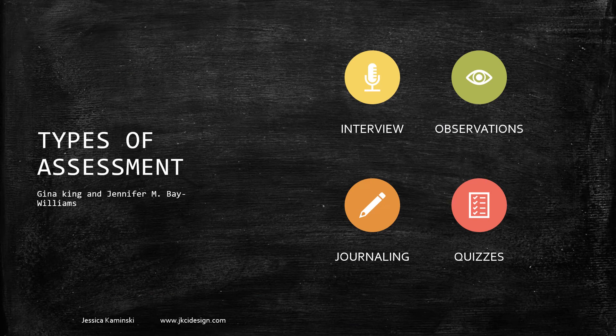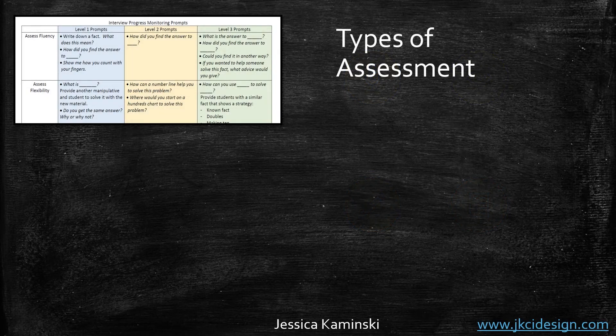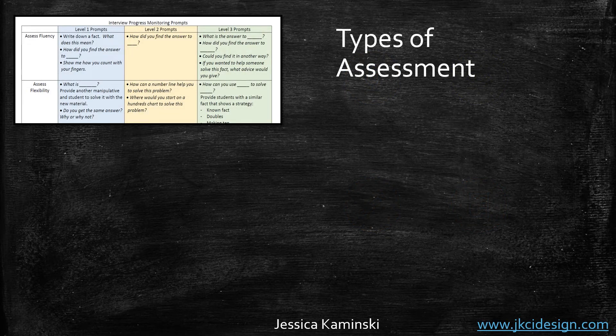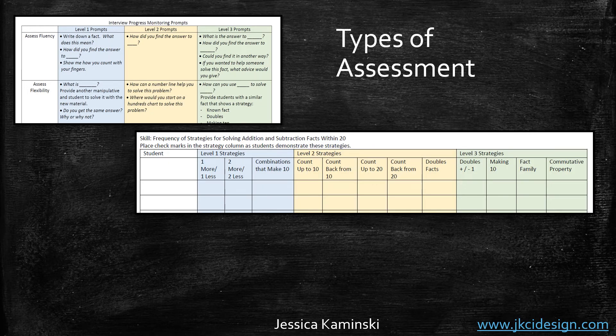But how do we assess them? Timed tests may not give us the most information. As a teacher, I want my assessment to guide my instruction — because that's really what assessment should be. Gina King and Jennifer Bay Williams came up with ways to assess students using interview observations, journaling, and quizzes that give us more information. Things like using progress monitoring prompts to interview students and asking questions at different levels: How can a number line help you? What strategy would you tell a student struggling with this math fact? Or observations to see which strategies students are using so I know what type of mini lessons to lead in small group or whole group instruction.